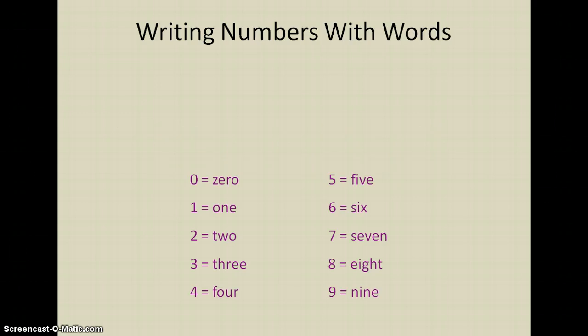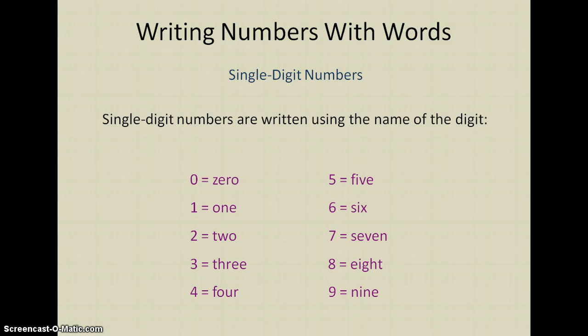When writing numbers with words, we'll go over the spellings of some words we're going to be using. For single-digit numbers, write the number using the name of the digit. You can see the spelling of each number here - there are a couple that are a bit tough, but make sure to learn those words and use them correctly. Those are the digits 0 through 9.